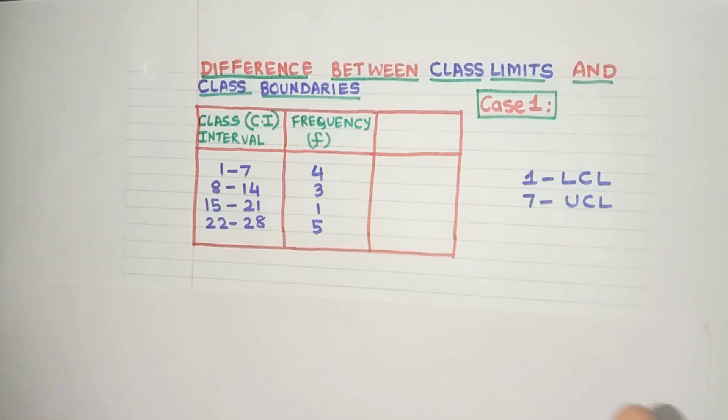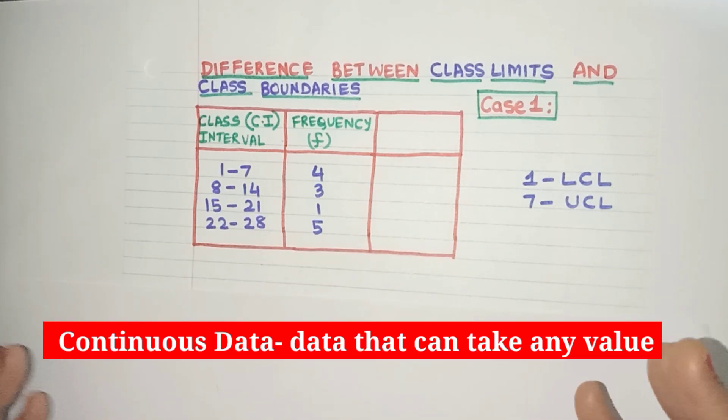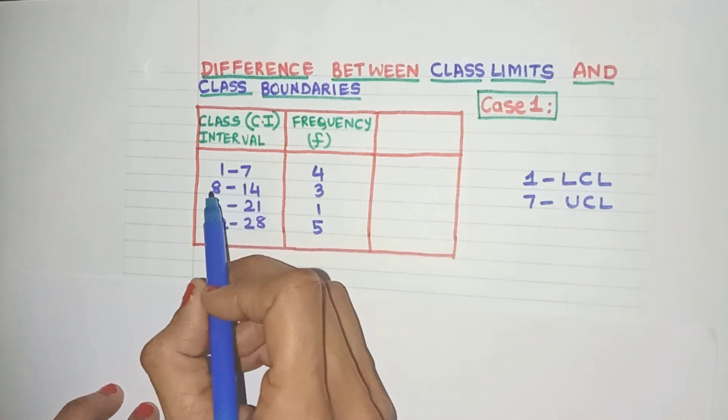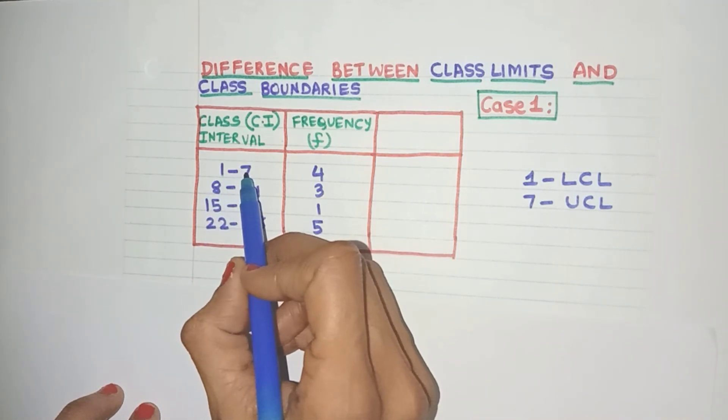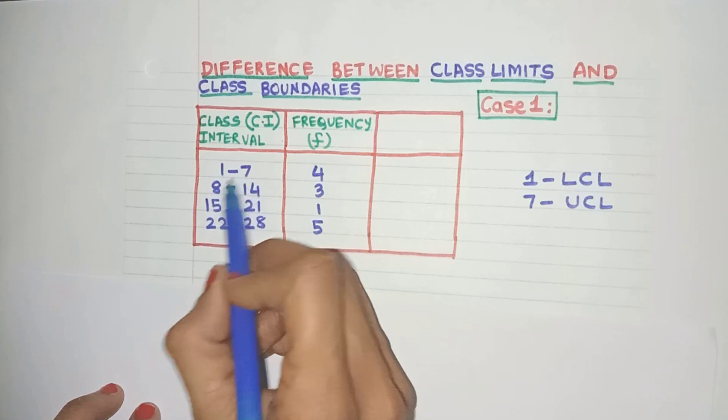But there are certain type of data which can take any value. For example, say daily temperatures in your city or height and weight of a person. These data are known as continuous data. Now did you notice friends that there is a gap between the upper class limit and the lower class limit of the previous class. See here.